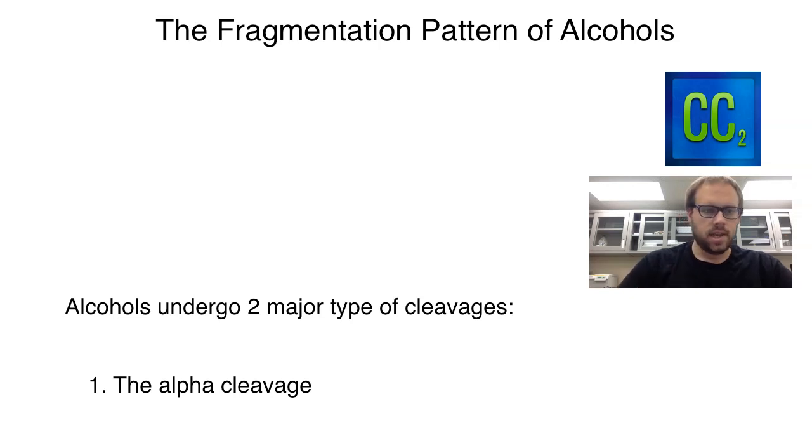First thing we're going to take a look at here is just the general process as far as what happens when you put something through a mass spec. So you're going to have your alcohol sample, some sort of organic compound, and that would be injected into the mass spec itself through the injection port. Now what the mass spec is going to do is it will use high ionization energy, and that ionization energy is going to cause fragmentation.